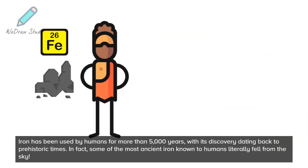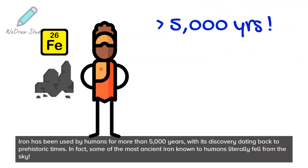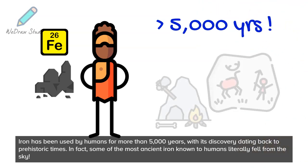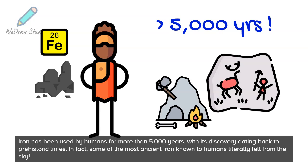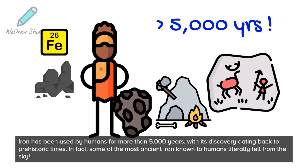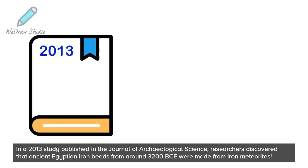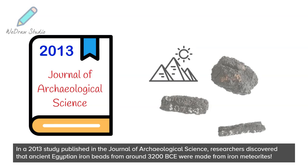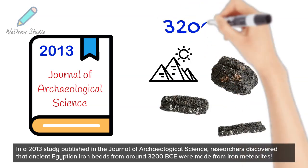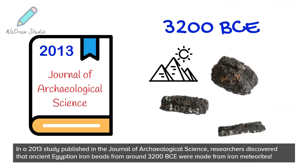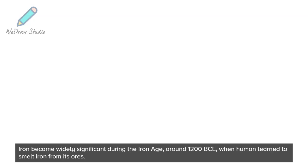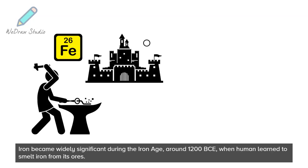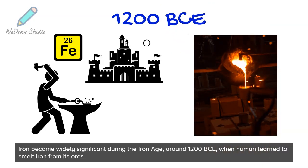Iron has been used by humans for more than 5,000 years, with its discovery dating back to prehistoric times. In fact, some of the most ancient iron known to humans literally fell from the sky. In a 2013 study published in the Journal of Archaeological Science, researchers discovered that ancient Egyptian iron beads from around 3,200 BCE were made from iron meteorites. Iron became widely significant during the Iron Age, around 1,200 BCE, when humans learned to smelt iron from its ores.